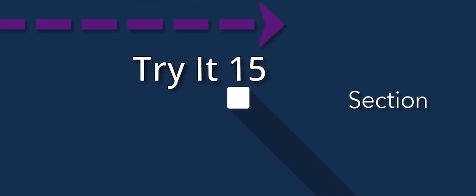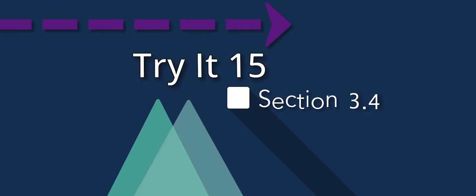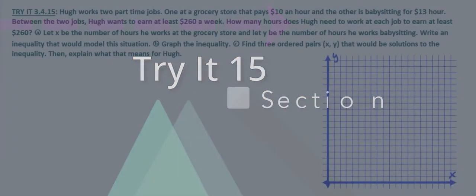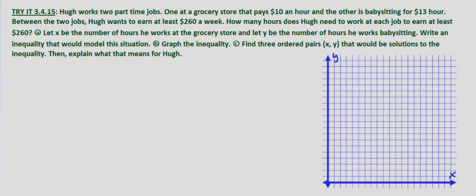So this problem we're looking at an application of inequalities in two variables. We're told that he works two part-time jobs, one at a grocery store that pays $10 an hour and the other is babysitting for $13 per hour.